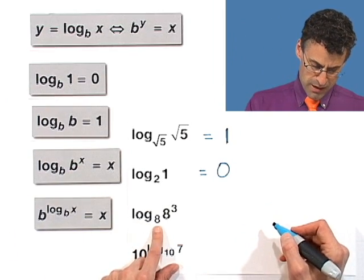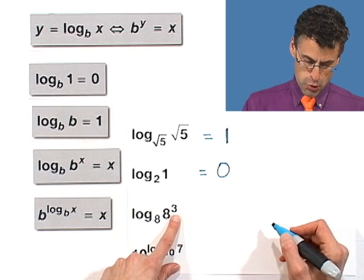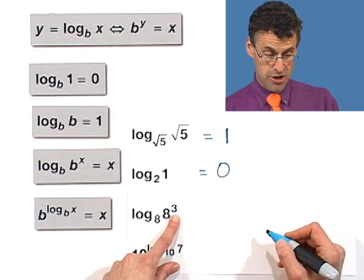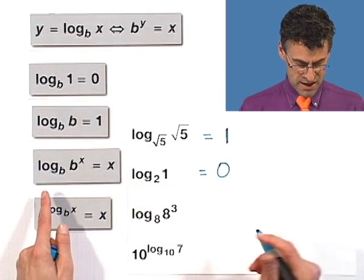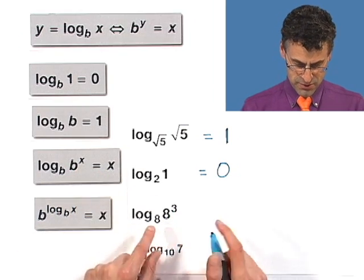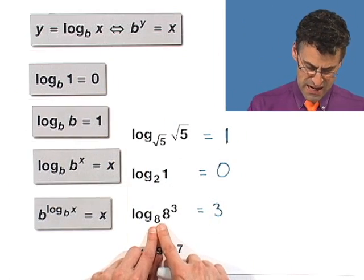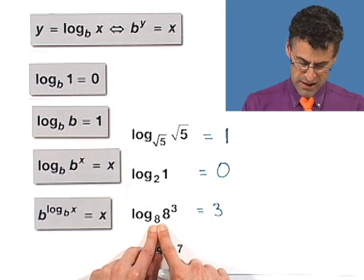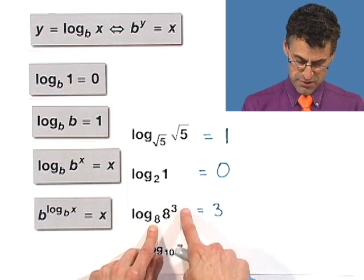What about log base 8 of 8 cubed? Well, here I'm actually going to go back to the very definition of log, or you could use this one right here and say log base 8 of 8 cubed equals 3. Or you can go back to the definition and say 8 to what power equals 8 cubed? Well, the answer is 3. 8 to the third power equals 8 cubed.